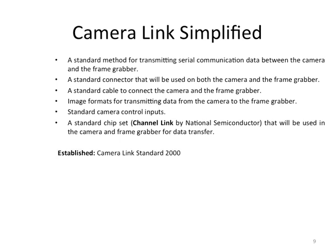The host computer used with these components can be any quality computer, and you can use any quality lens that fits your camera. Much of the software needed is inside the camera — it's called firmware — and it's up to camera manufacturers to make sure their firmware conforms to the CameraLink standard. When you buy a CameraLink camera, you typically receive a camera control program and a more comprehensive software package from the frame grabber company.